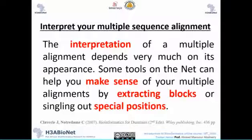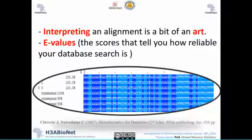Today we'll talk about interpreting your multiple sequence alignment. Interpretation means making sense of your alignment — you have to extract some blocks, see special positions, and try to find a biological meaning. This interpretation is a little bit of art. You have to know some information about the E-value, which you have already studied in the last module in more detail.